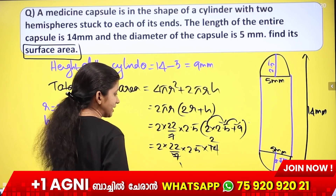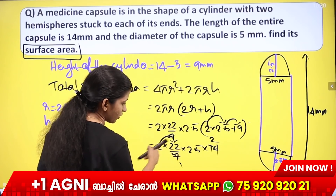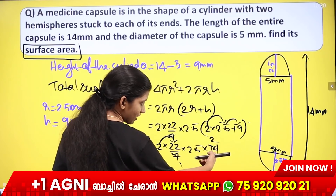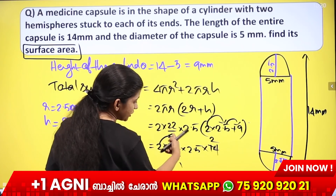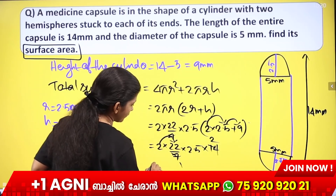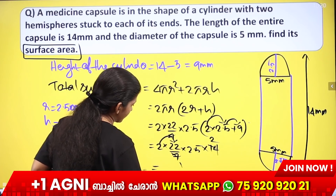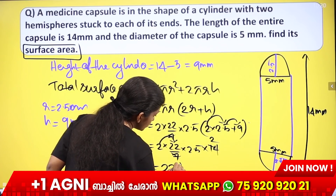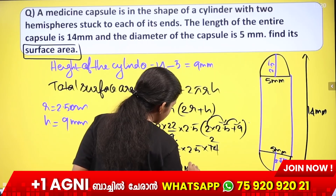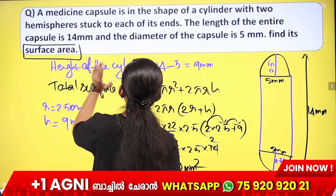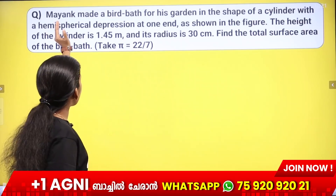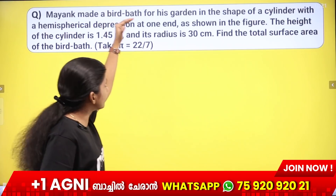Calculating: 44 × 2.5 = 88 × 2.5 = 220 millimetres squared. The medicine capsule total surface area is 220 mm².